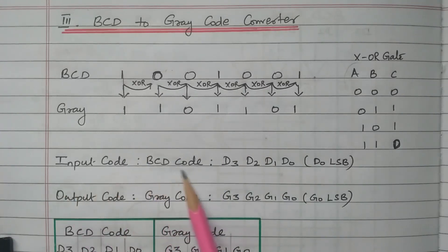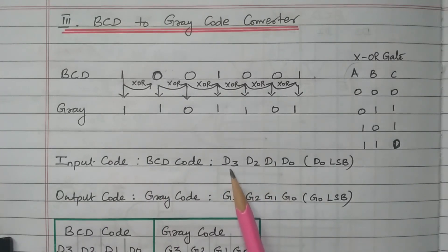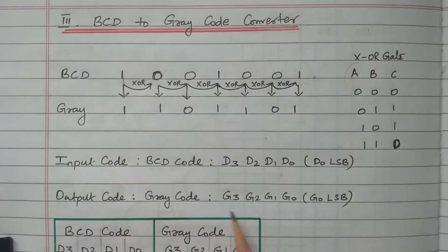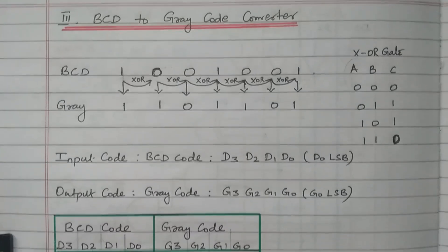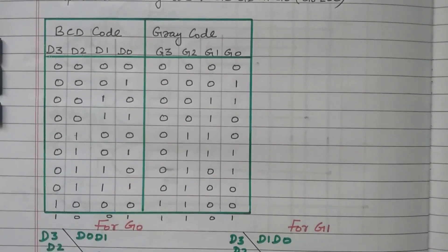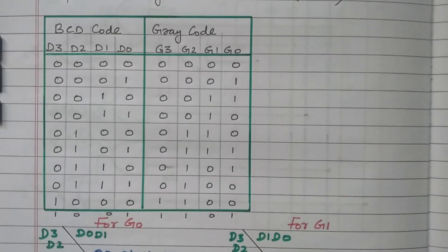The input code is the BCD code: D0, D1, D2, D3, where D0 is the LSB and D3 is the MSB. The output code is the gray code: G0, G1, G2, G3, where G0 is the LSB and G3 is the MSB. Now we will form the truth table. From the truth table, we can derive the Boolean expression, and by using the Boolean expression, we can implement with logic gates.